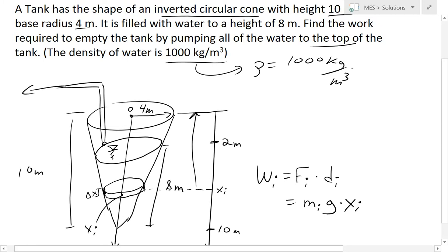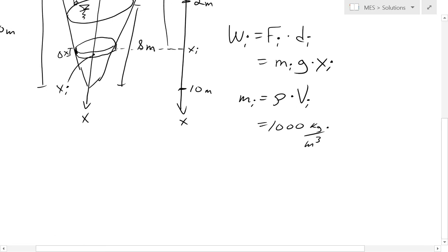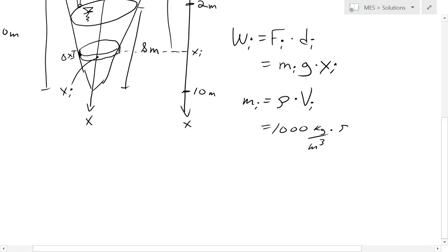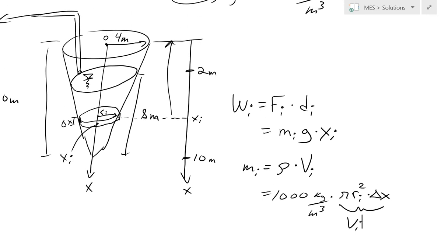To figure out the mass, we know the density is given as ρ = 1,000 kg/m³. We can find the mass by multiplying density by volume. So m_i = ρ × V_i = 1,000 kg/m³ × π·r_i²·Δx, where the volume of this disk is π·r_i²·Δx. Here r_i is the radius of this slice.